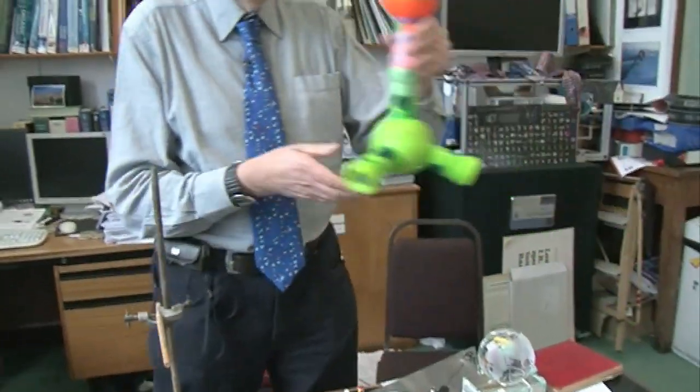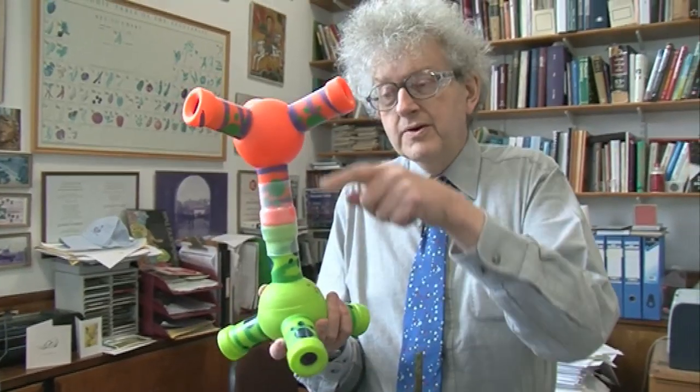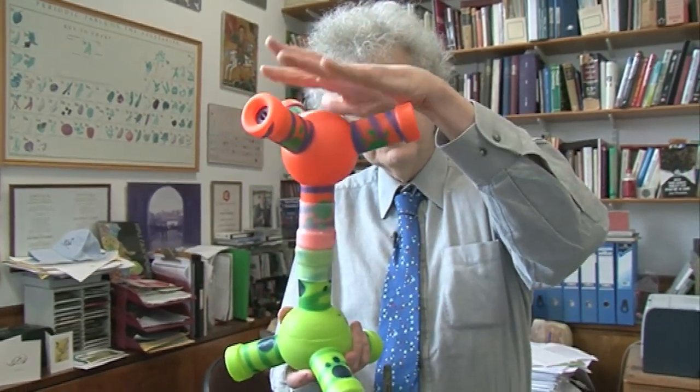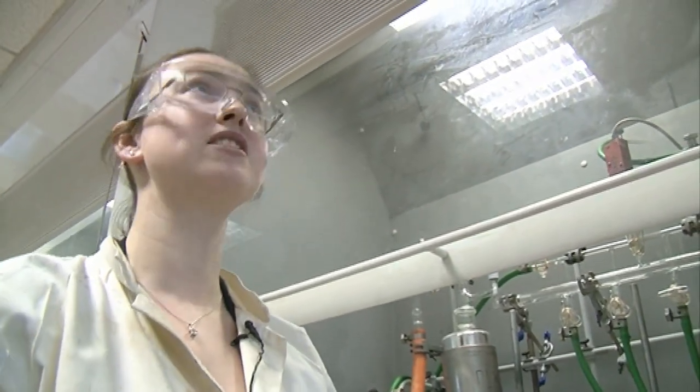And when it does happen, you get a molecule like this one, where here you have the boron, which has had two electrons given to it by the ammonia. This is a syringe. Obviously, boron tribromide is a liquid. It actually melts at, I think it's about minus 46 degrees.